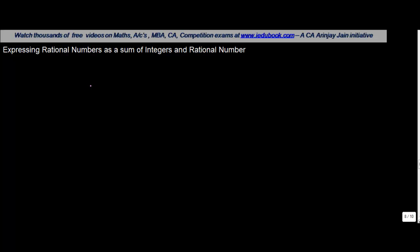Many times what will happen is that you may get certain rational numbers which you are required to convert as a sum of an integer and a rational number. For example, you have 23 upon 7 and another one is 21 upon 9. What do you do in such a case?